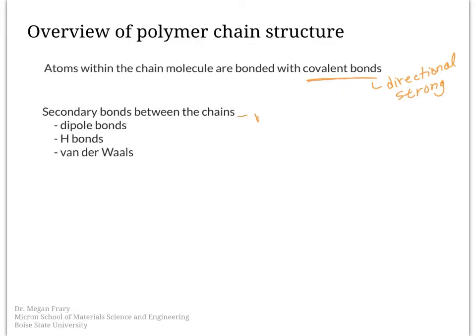These secondary bonds are much weaker than the covalent bonds, and these allow the chains, under the right circumstances, to sort of move with respect to each other while the covalent bonds in the chains hold those atoms together. The chains are made up of mer units — that's where the name polymer comes from — and we typically have on the order of 10³ to 10⁵ mers per chain. The number of mers in the chain, or the chain length, also helps to determine the mechanical properties.